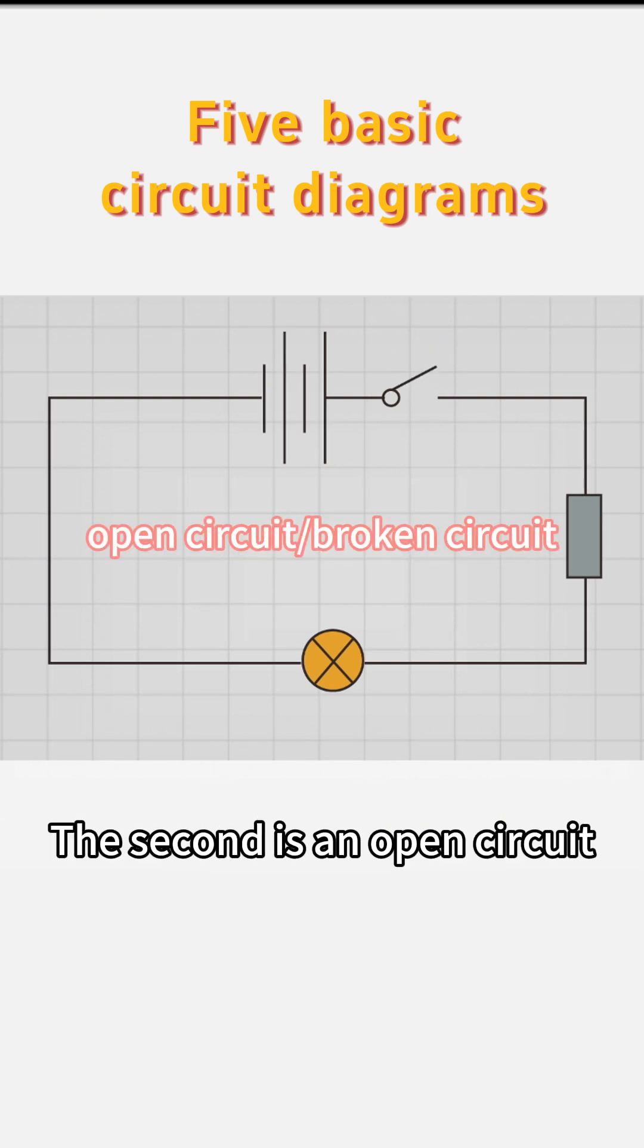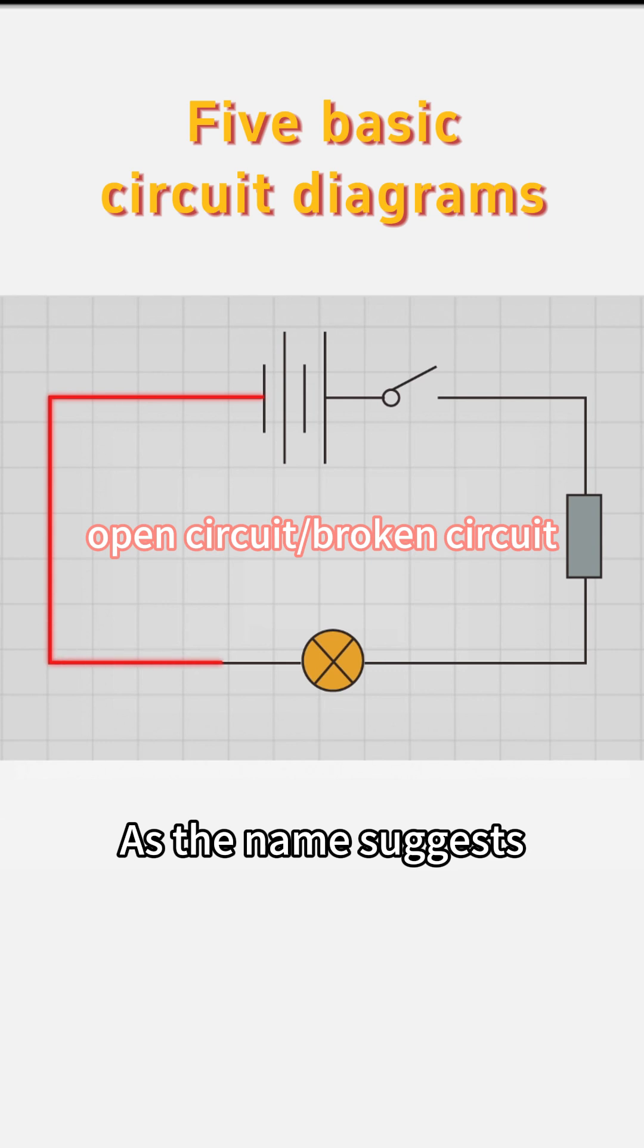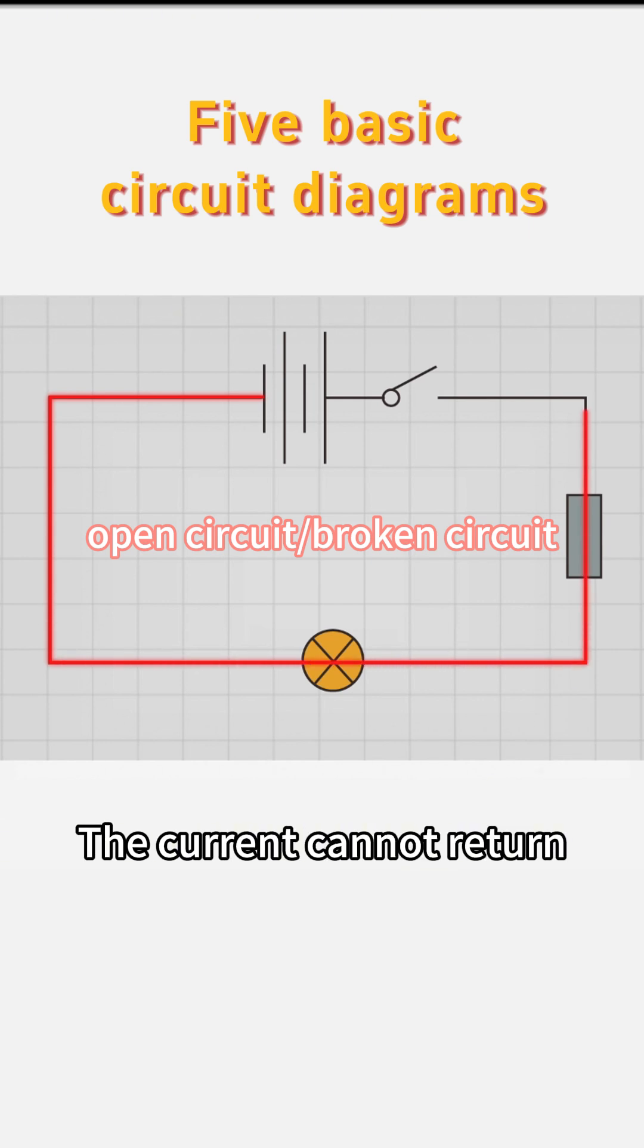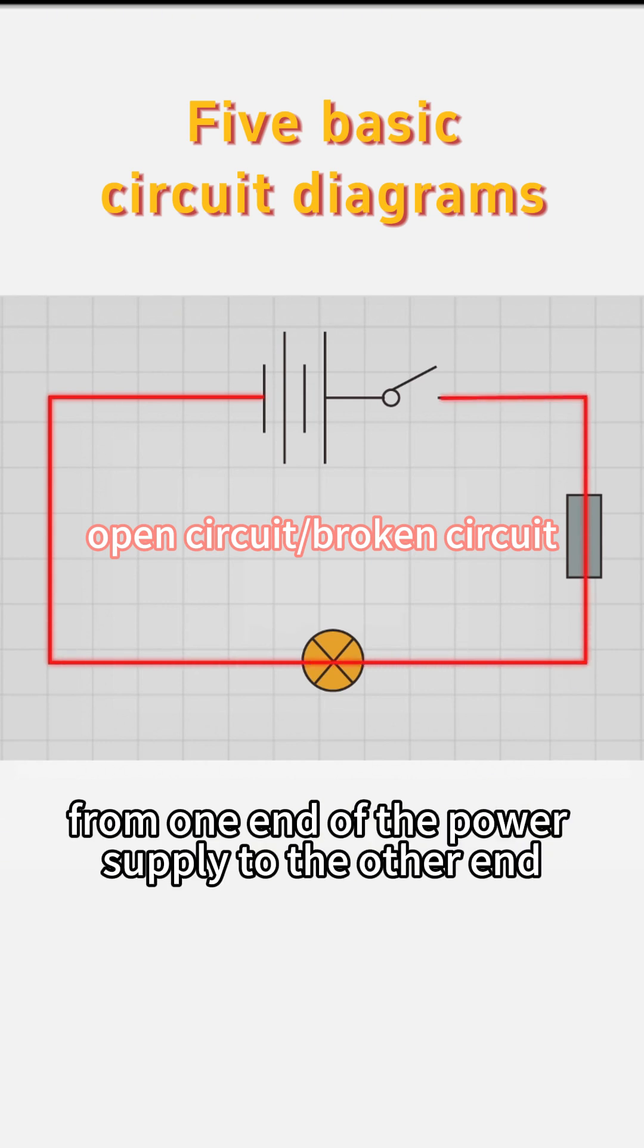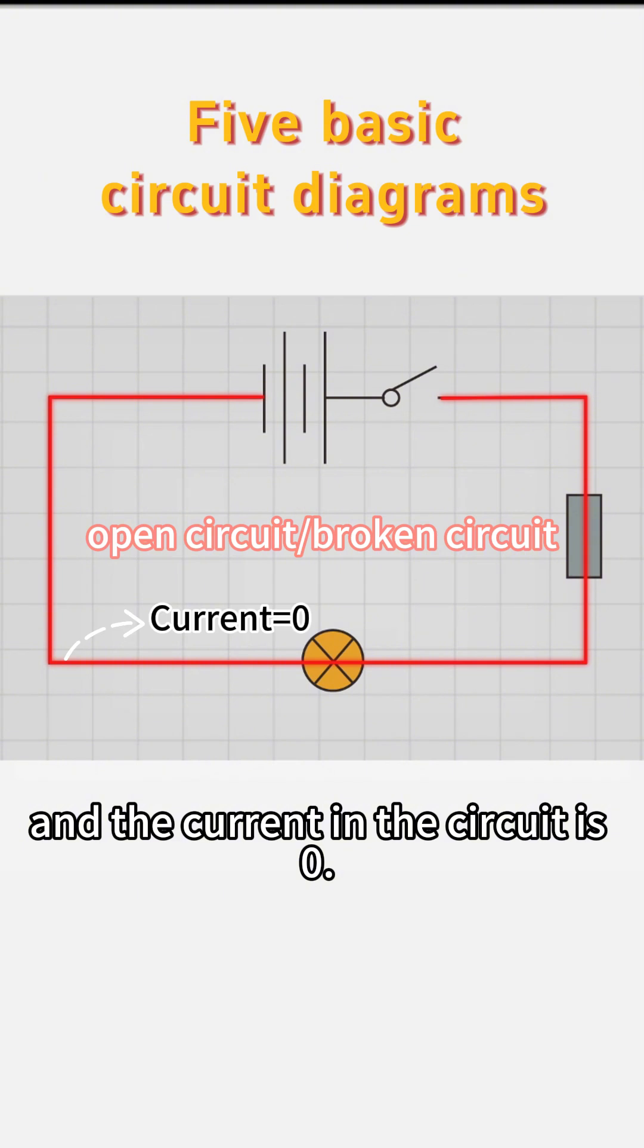The second is an open circuit, also called a broken circuit. As the name suggests, the circuit is broken. The current cannot return from one end of the power supply to the other end, and the current in the circuit is zero.